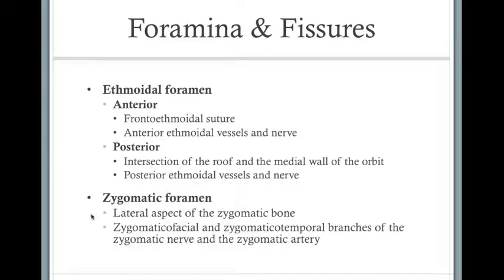The zygomatic foramen is located on the lateral aspect of the zygomatic bone, and it transmits the zygomaticofacial and the zygomaticotemporal branches of the zygomatic nerve. The zygomatic artery also passes through the zygomatic foramen.